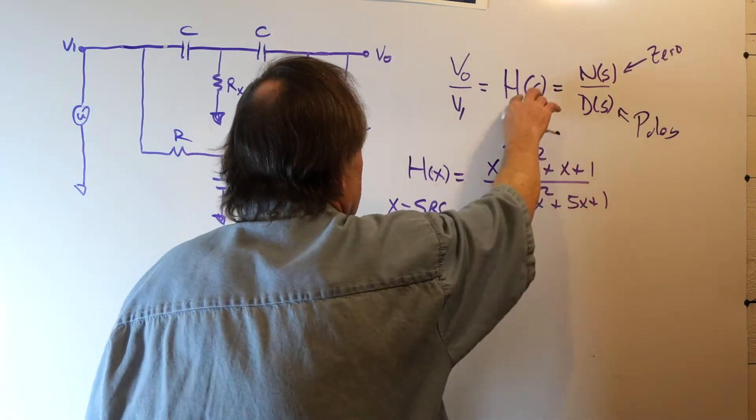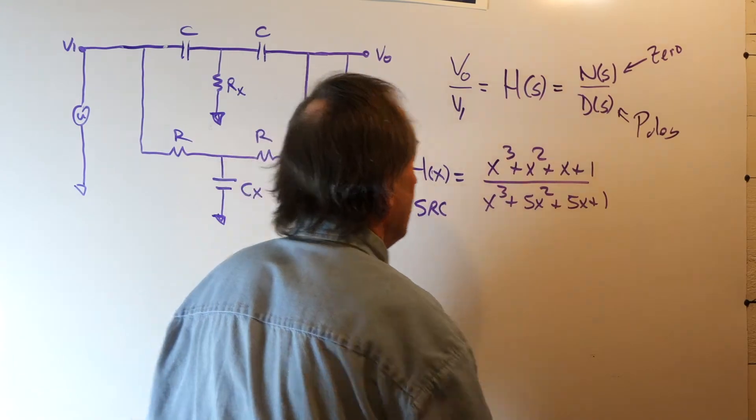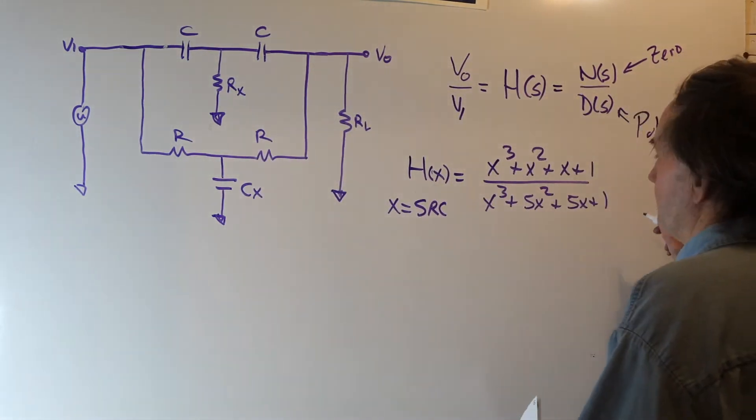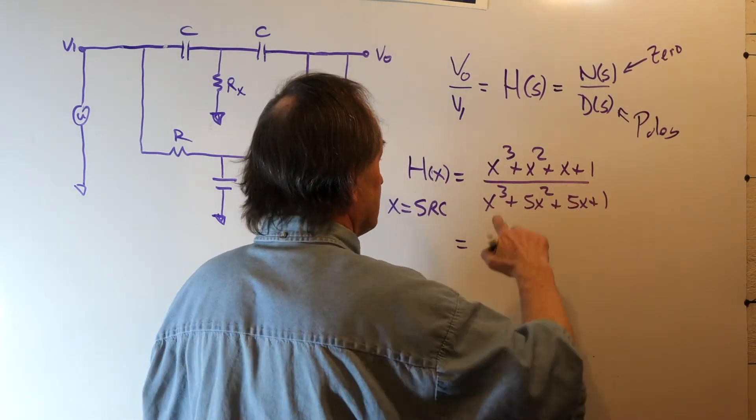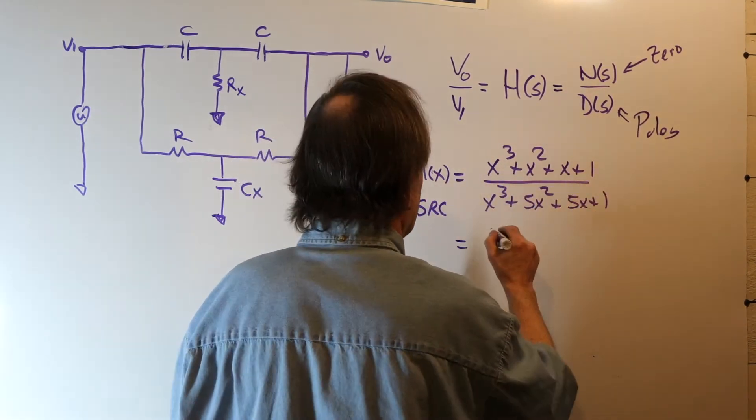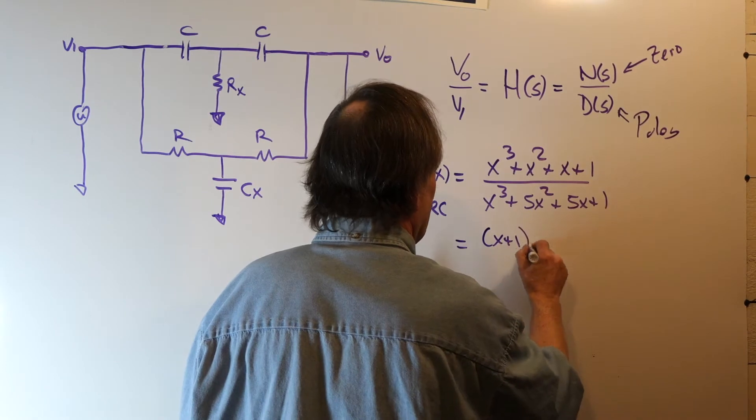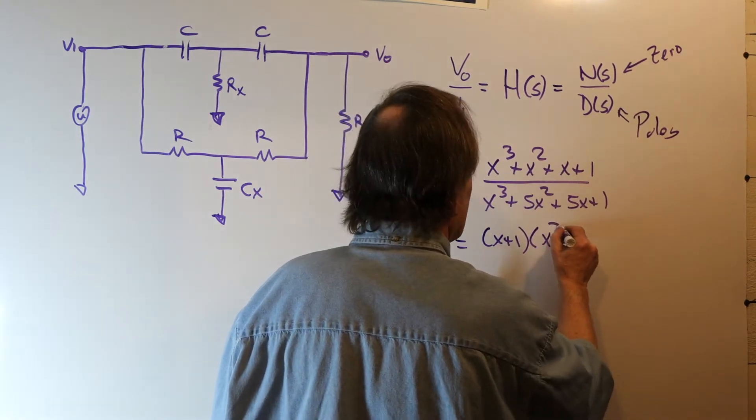the system transfer function will have this form. Well, it turns out that these can be factored. X cubed plus X squared plus X plus 1 can be factored as X plus 1 times X squared plus 1.